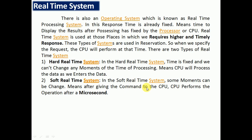There is also an operating system known as a real-time processing system. In this, the response time is already fixed — the time to display the result after processing is fixed by the processor or CPU. Real-time systems are used where higher or timely response is required, such as reservation systems. There are two types: hard real-time systems, where time is fixed and cannot be changed, and soft real-time systems, where the time can be changed.